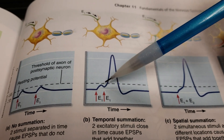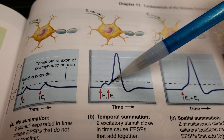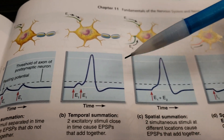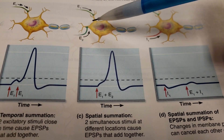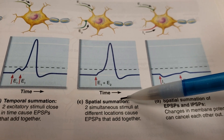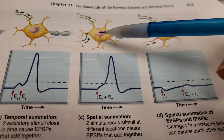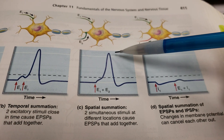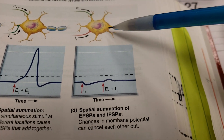Temporal summation means pertaining to time — if graded potentials come quickly enough after one another, the membrane can hit threshold and generate an action potential. But that's not the only way potentials can be added together. If events occur simultaneously on different areas of the neuron, those areas can add up — that's called spatial summation. Here we have different parts of the neuron being stimulated simultaneously, and that combined stimulation can be enough to reach threshold and produce an action potential.